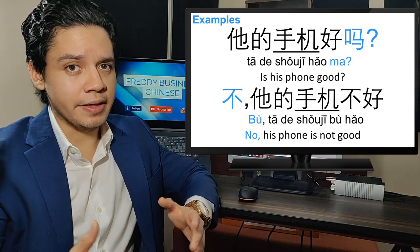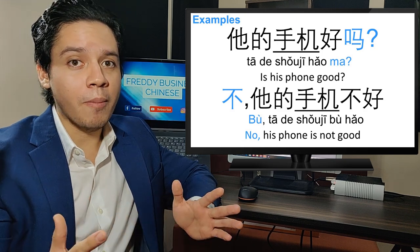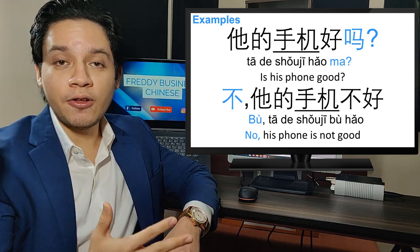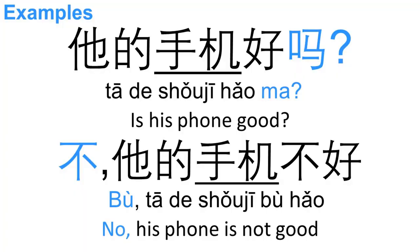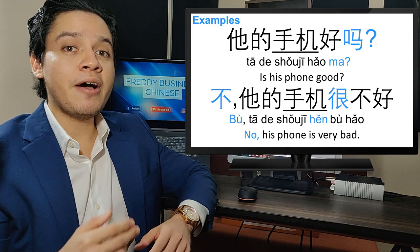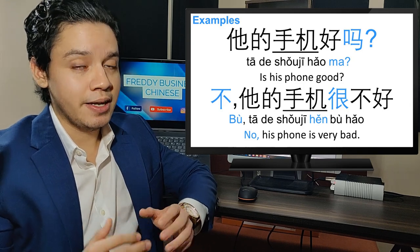他的手机好吗? — Is his cell phone good? The answer is negative: 他的手机不好 — No, his cell phone is not good.